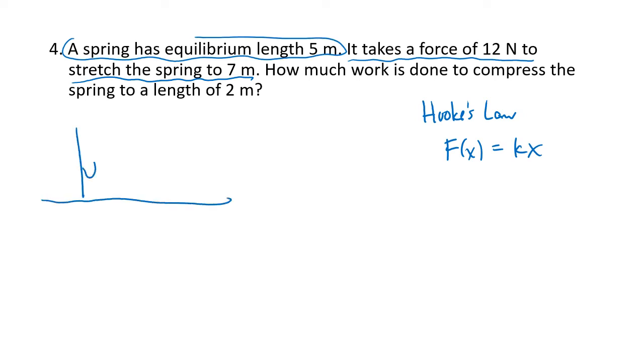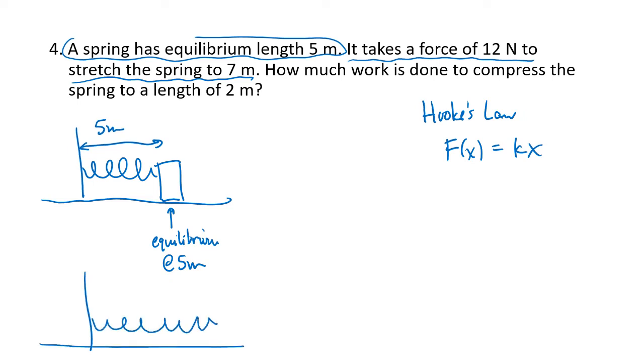If this is a wall, and we've got the spring sort of attached to the wall, and then we've got the end of the spring, which is some block, if this is equilibrium at 5 meters, so this distance is 5 meters. And then we stretch the spring to 7 meters. Then what we've done is we've gone from equilibrium, which is x equals 0, to x equals 2, because we've gone two units to the right from our equilibrium.